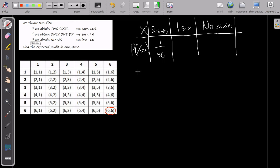Now, the next one is to obtain only one six. I have to calculate all the combinations where I have only one six. So, one, two, three, four, five, six, seven, eight, nine, ten. So basically, it's ten out of thirty-six.